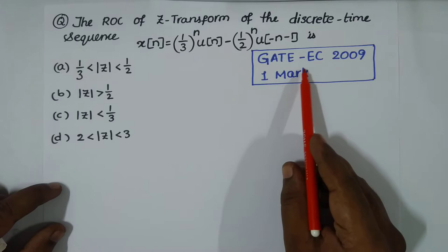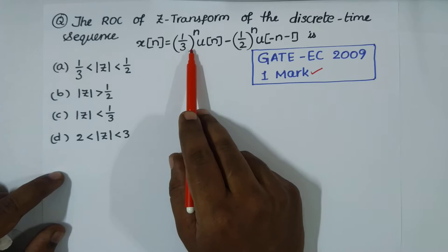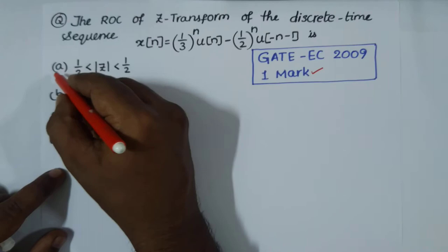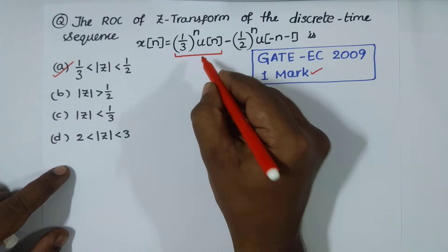Here again we have one of the easiest questions from Z-transform asked in GATE EC 2009 for one mark. The region of convergence of the Z-transform of the discrete time sequence x[n] = (1/3)^n u[n] - (1/2)^n u[-n-1] is... In no time we can go for the correct option. From this we can say option A is correct — it took approximately one second to identify the correct option.